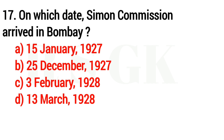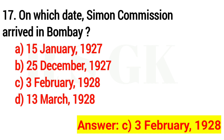Question 17. On which date did the Simon Commission arrive in Bombay? Answer: option C, 3rd February 1928.